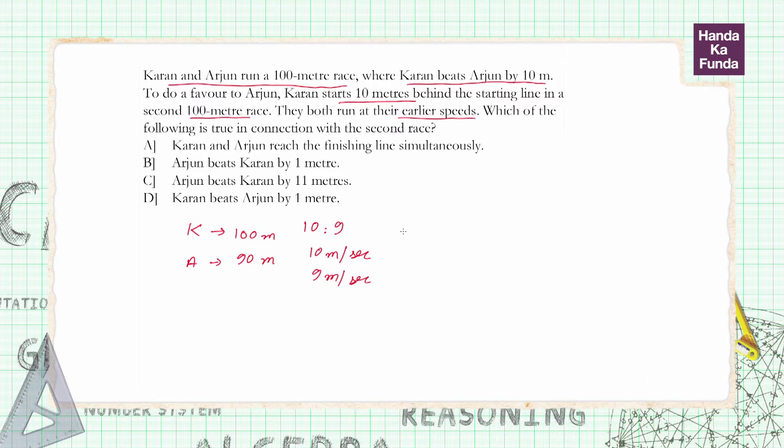speeds, which means that Karan would have to cover a total of 110 meters at a speed of 10 meters per second, so he will take a total of 11 seconds to run the second race. Whereas Arjun